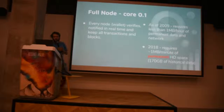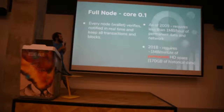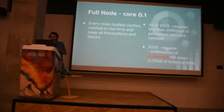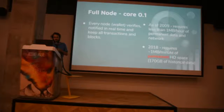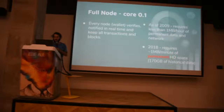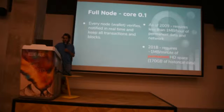First of all, we are talking about the full node — what is published as Bitcoin Core 0.1. Every Core 0.1 node verifies in real-time every transaction, every block. It keeps everything that happens on the network — everything is kept, everything is notified, everything is verified.